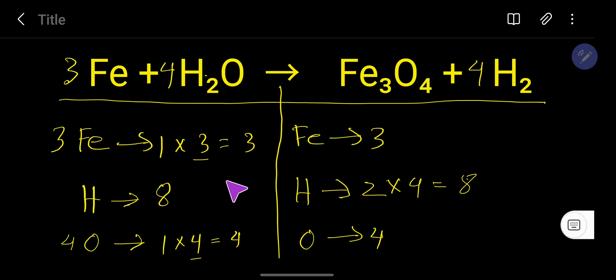Now see, three three, eight eight, and four four. So you can say that this is the balanced chemical equation. At last, you have to use this arrow sign. Don't use equal sign, right. So thanks for viewing this video. Be well.